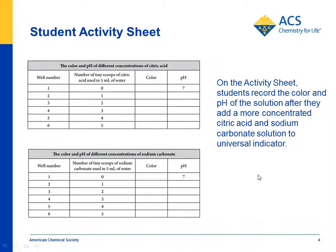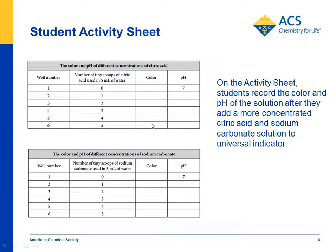On the activity sheet, students write down the number of toothpick scoops of citric acid they used, the toothpick scoops of sodium carbonate, the color they observed, and then the pH associated with that color. This is just to give them a feel that the more concentrated acid they use, the more acidic the solution — the more toward the red part of the color chart it goes, and the lower the pH will be.